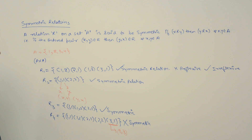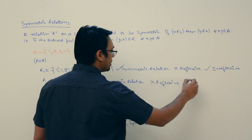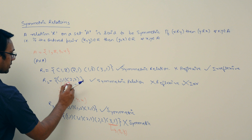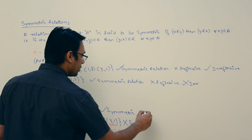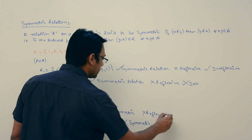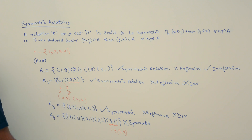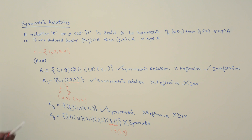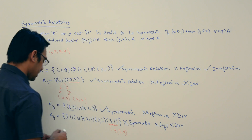Looking at relation R2: it is not reflexive and also not irreflexive. Relation R3 is not reflexive — it doesn't have pairs (2,2), (3,3), and (4,4) — and it is not irreflexive because it contains (1,1). You can check previous videos for what reflexive and irreflexive relations are. Relation R4 is again not reflexive and also not irreflexive.